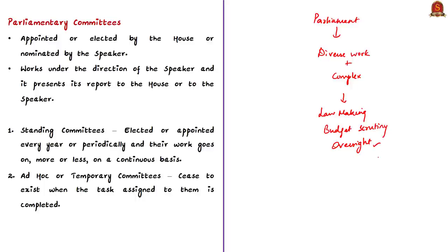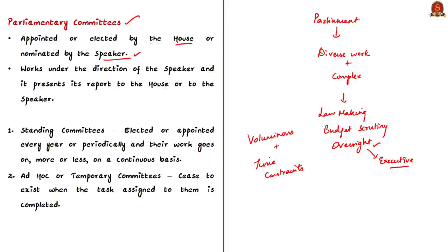Parliament has to give close consideration to all the legislative and other matters that come up before it. These works are considerable in volume, but there are time constraints because parliament has to act within a limited amount of time. Therefore parliament cannot give close consideration to all matters. So a good amount of parliamentary business is transacted in the committees of the house. A parliamentary committee means a committee that is appointed or elected by the house or nominated by the speaker of either house of parliament.